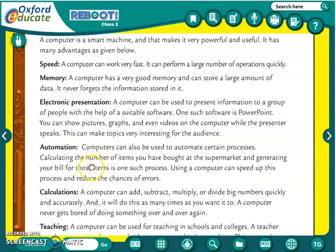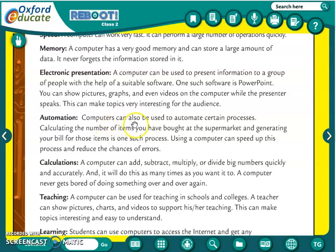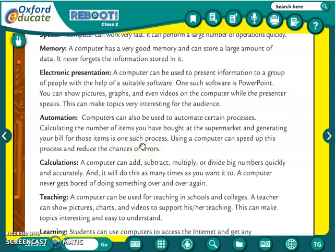Then, Automation. A computer can also be used to automate certain processes. Calculating the number of items you have bought at the supermarket and generating your bill for those items is one such process. Using a computer can speed up these processes and reduce the chances of errors. If you had to count everything manually, it would take a lot of time, but the computer handles that calculation automatically.